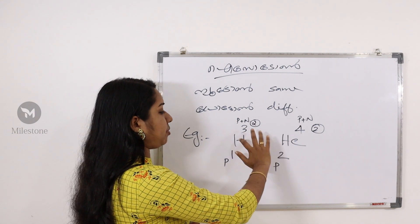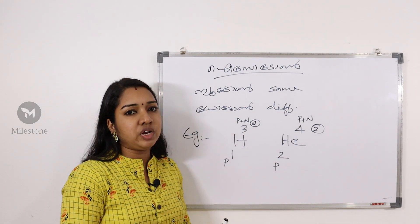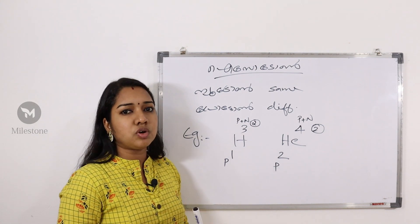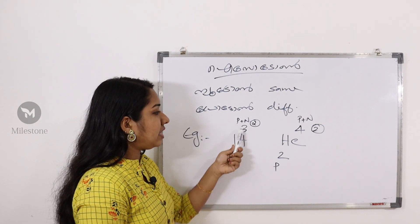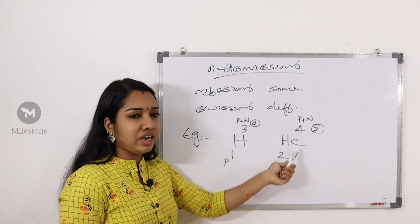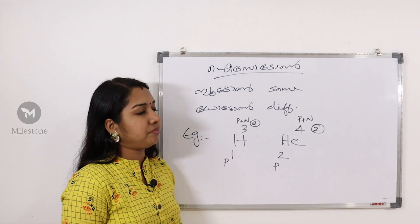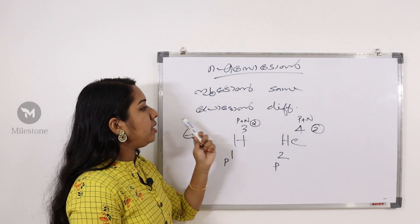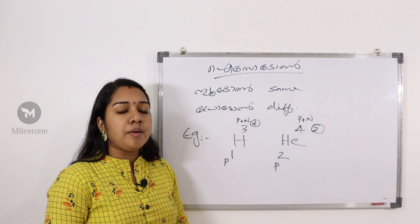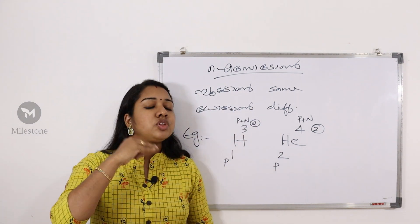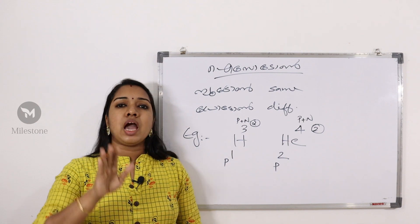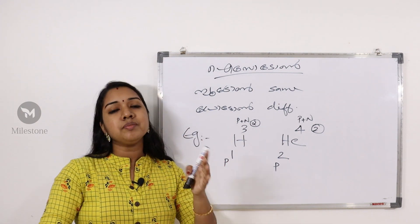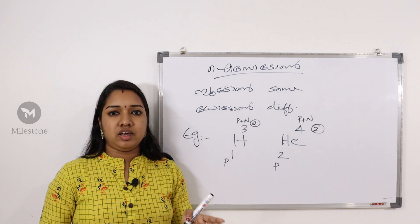The neutron is the same — that is isotone. The proton is different. If you have the atomic number and the mass number, the atomic number is different, but the neutron is the same.